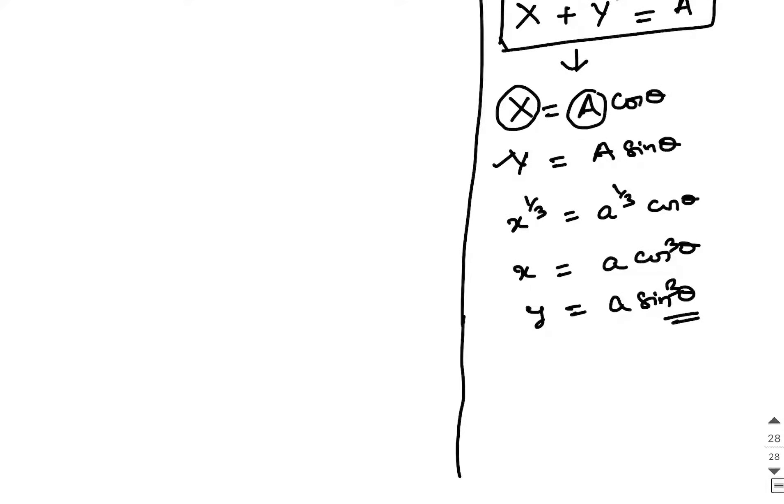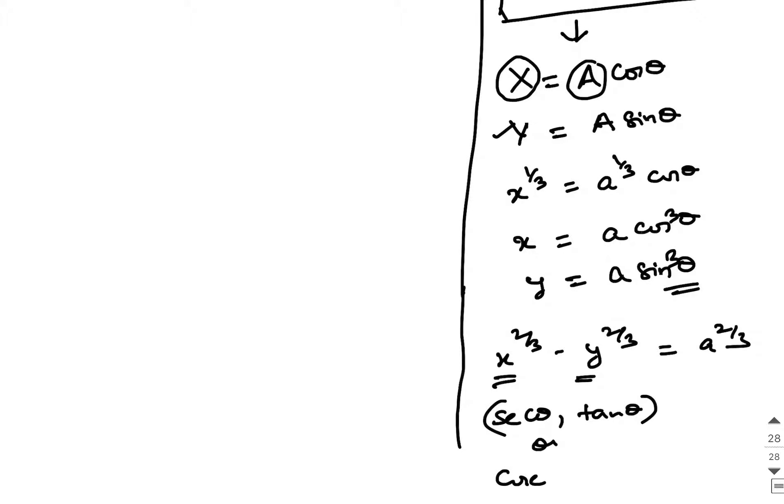One more important point is had the question been x power 2 by 3 minus y power 2 by 3 equals A power 2 by 3, then in the place of x and y you can either think of secant theta and tan theta or cosecant theta and cot theta.